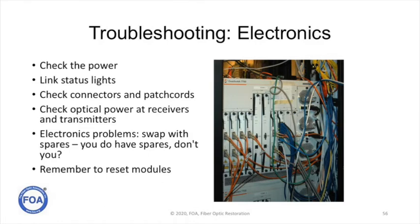When you start troubleshooting electronics, you start with the first thing you do with anything electrical — you check the power. You see if it's already kicked into backup power, which might have glitched the modules. You check link status lights and look for greens. When you start checking the fiber, check the connectors first to make sure they're clean and good, and patch cords to ensure nobody has damaged them. We can check the optical power at the receivers and transmitters to see if they're within spec. You're going to have to swap modules that are bad for spares, which should have been part of your planning process. Remember after you swap them that you often have to reset them before they will operate.